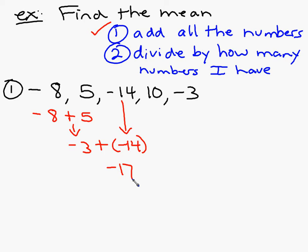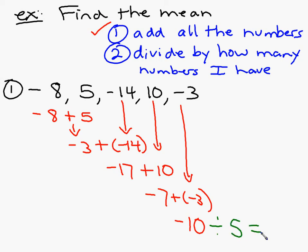Now I need to add 10. Negative 17 plus 10 is what? Negative 7. And now I need to add negative 3. Negative 10. That's not my answer. We're finding an average. So to find the average, now I need to divide this by what? 5. So negative 10 divided by 5 is negative 2. Make sure you get your sign correct. So you'll have some problems tonight where you have to find the mean.